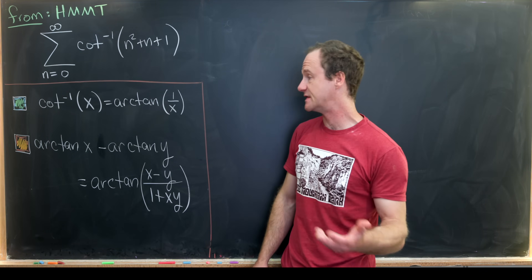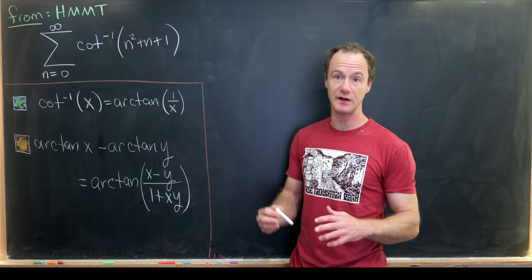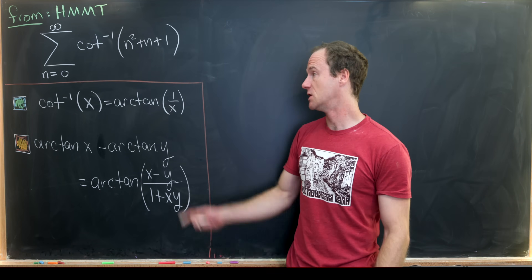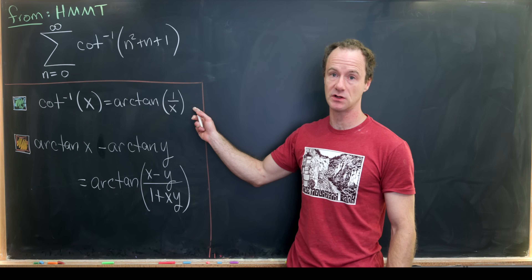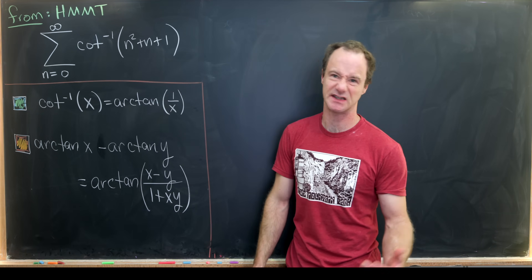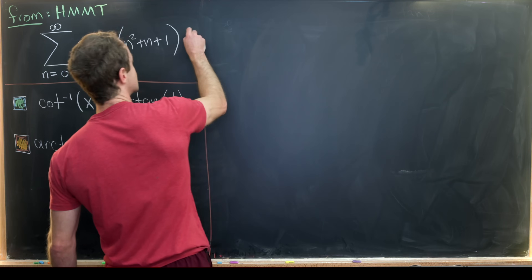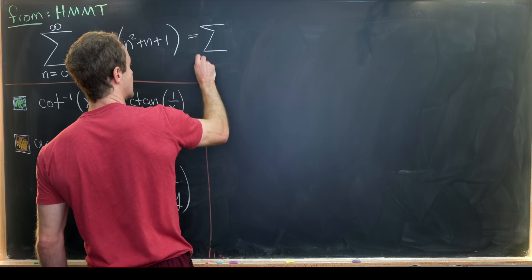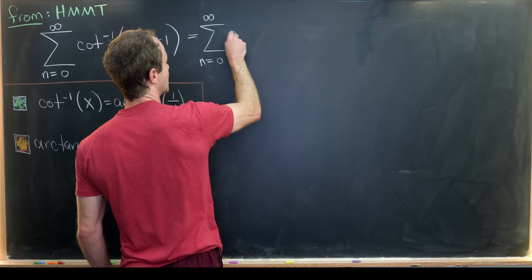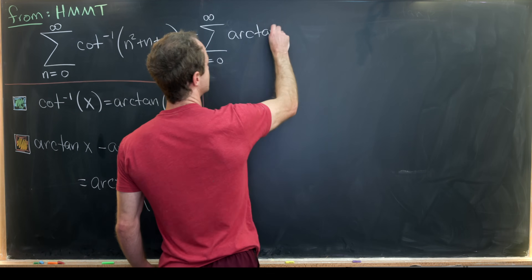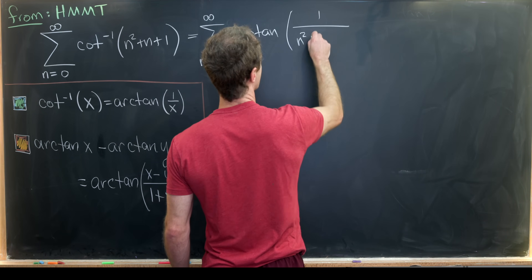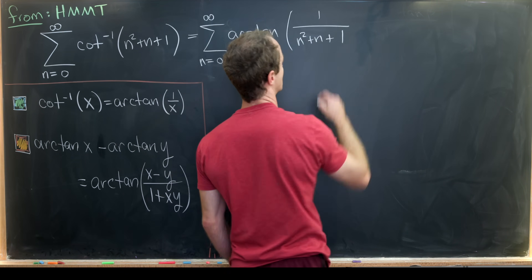Now that we've derived these two tools, it's just a matter of putting them together to find the closed form for this sum. We start with the first tool to express the sum as a sum of inverse tangent instead of inverse cotangent: the sum as n goes from zero to infinity of arctan of 1 over (n squared plus n plus 1).